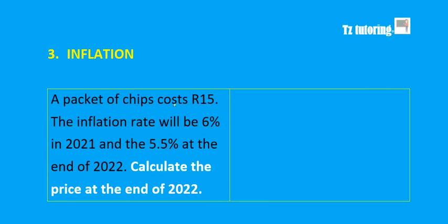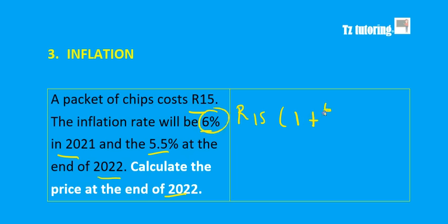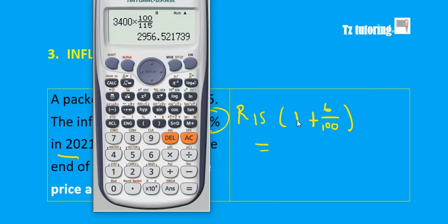For this inflation question, a pack of chips costs R15. The inflation rate is 6% in 2021 and 5.5% in 2022, and you must calculate the new price at the end of 2022. You start with R15 and multiply by brackets for each year: 15 × (1 + 6%) — using the bracket with one plus the inflation rate to get the new price.